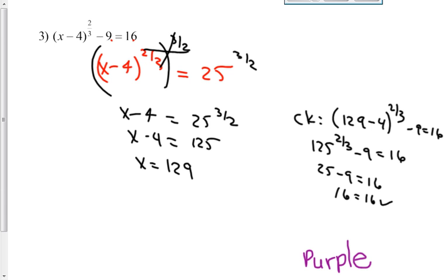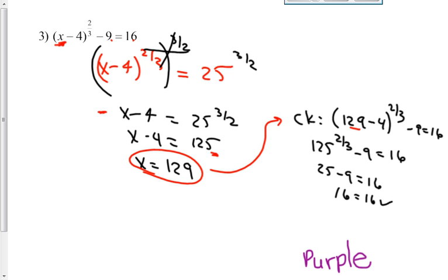Then I raised it again to the reciprocal power — 2 thirds raised to the 3 halves. That cancels out my 2 thirds, but remember to raise it to the 3 halves on the other side as well. That leaves me with x minus 4 equals 25 to the 3 halves. 25 to the 3 halves is 25 to the 1 half, which is 5, then cubed is 125. Add 4 to both sides and I get x equals 129. Checking: 129 minus 4 to the 2 thirds minus 9 — 125 to the 2 thirds is 5 squared, which is 25 minus 9 — and 16 equals 16. Check.